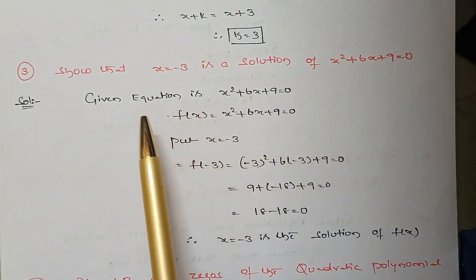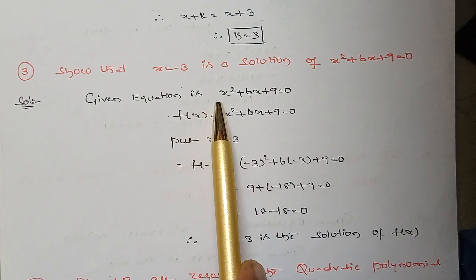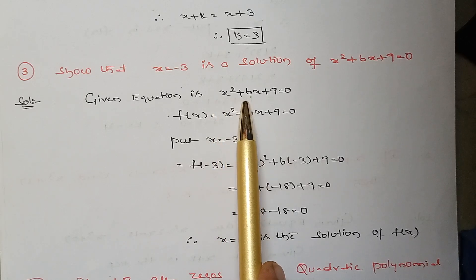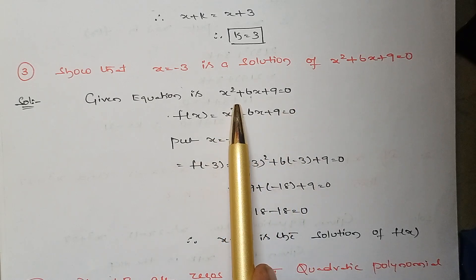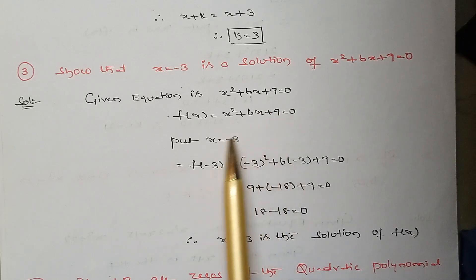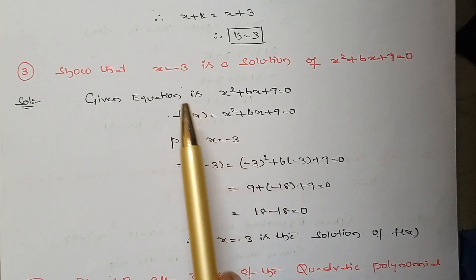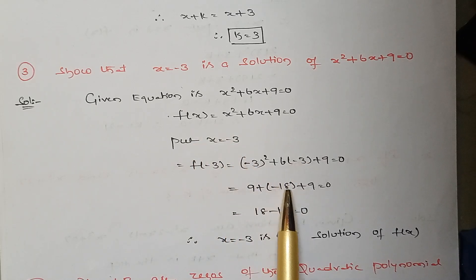First let's write what is given. The given equation is x squared plus 6x plus 9 equal to 0. Now we take that equation as f(x), so it becomes x squared plus 6x plus 9 equal to 0. Put x equal to minus 3 — replace x by minus 3 and simplify. We got 0.